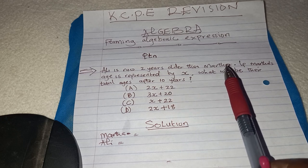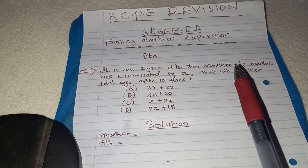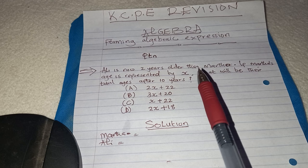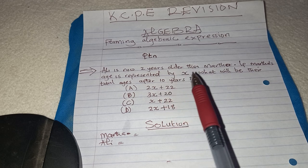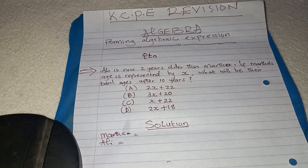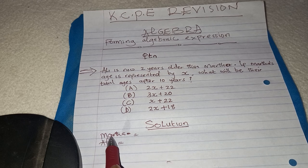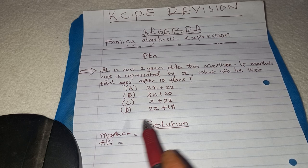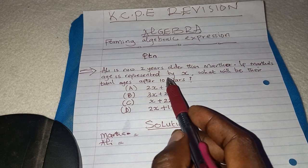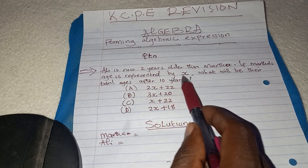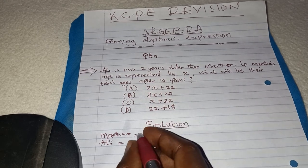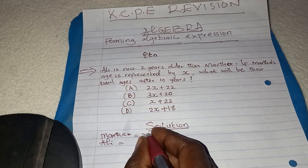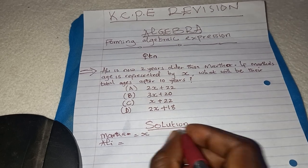In this question, it requires you to change the statement into a mathematical operation. So you start by listing the people involved in the question. We have mother and we have Ali. You are told that the age of mother is represented by X, so we write: mother equals X years.